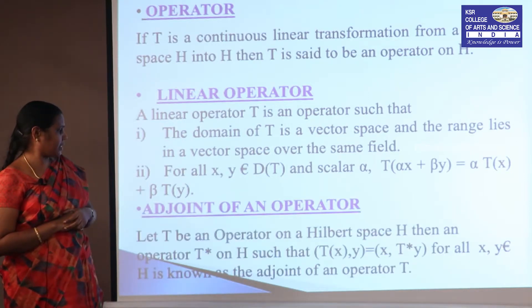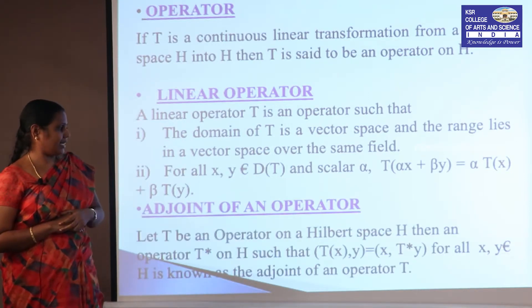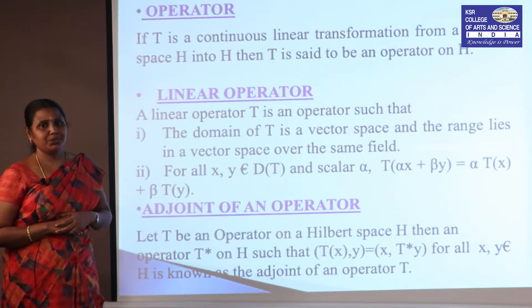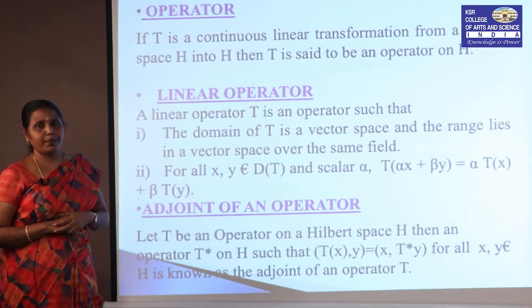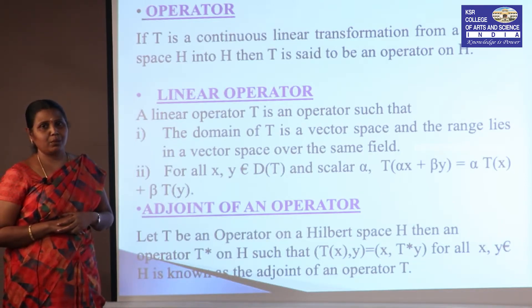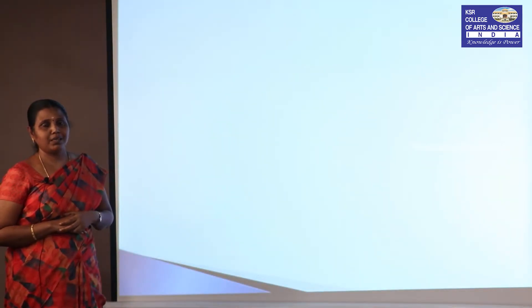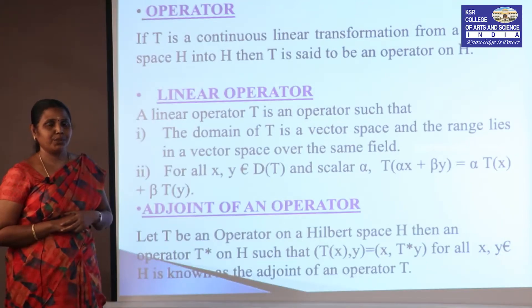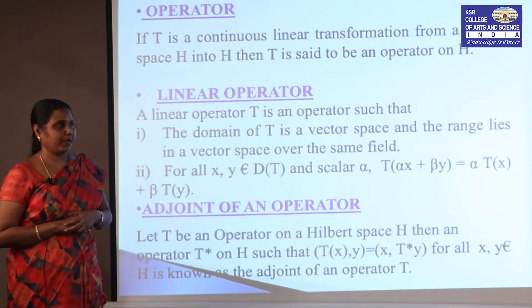Next we see the adjoint of an operator. The adjoint is defined by the condition: the inner product of Tx and y is equivalent to the inner product of x and T* of y. This is said to be the adjoint of an operator.